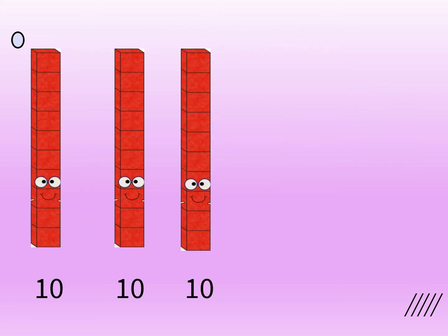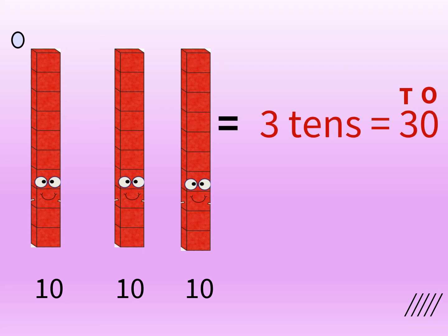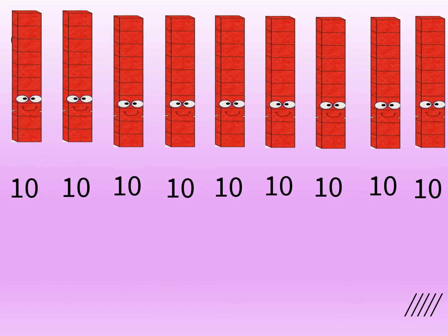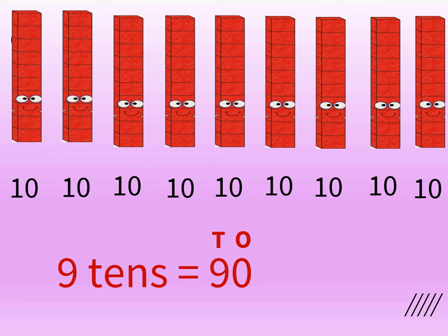Now can you guess this number? There are 3 tens. 3 tens is equal to 30. Now let's see how many bars of 10s we have here: 1 ten, 2 tens, 3 tens, 4 tens, 5 tens, 6 tens, 7 tens, 8 tens and 9 tens. So we have 9 bars of 10s here. That means 9 tens is equal to 90.